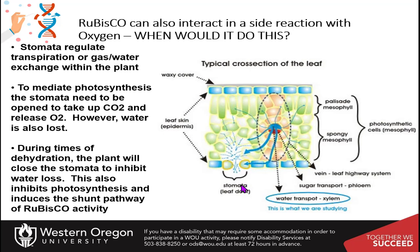When you have dehydration and too much transpiration and water loss, the plant has to close the stomata to inhibit water loss so it doesn't wilt. This inhibits photosynthesis and causes an induction of the shunt pathway of Rubisco activity, because oxygen builds up from the light reactions and the inability to have gas exchange. Carbon dioxide also goes down because the Calvin cycle is active and utilizing it with the Rubisco enzyme. So once CO2 goes down and oxygen is up, Rubisco will continue to make products with the oxygen present.